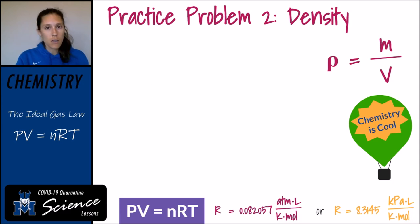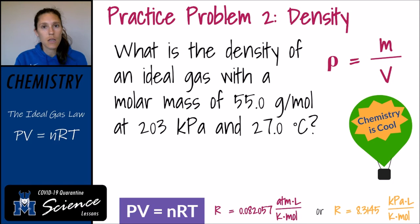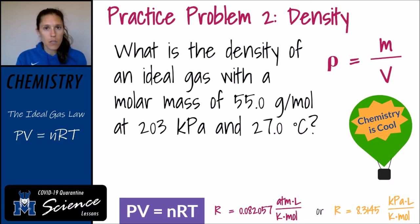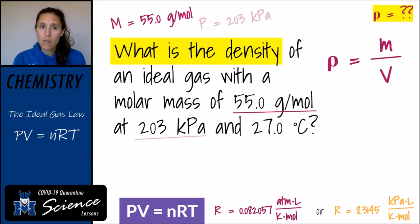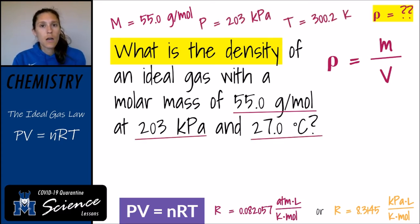We are going to use the ideal gas law to calculate the density of a gas. This practice problem asks: what is the density of an ideal gas if it has a molar mass of 55.0 grams per mole, a pressure of 203 kilopascals, and a temperature of 27 degrees Celsius? We need to figure out the density. We know the molar mass, the pressure, and the temperature.